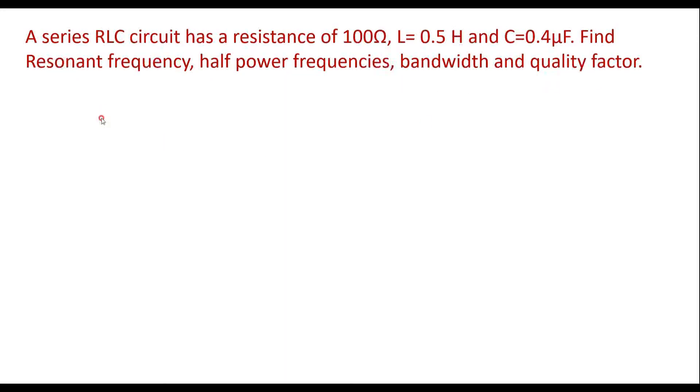Let us draw the series RLC circuit first. R is given that is 100 ohm, L is given that is 0.5 Henry and C is given that is 0.4 microfarad. Assume that this supply voltage is V.